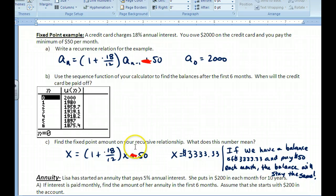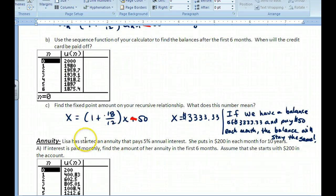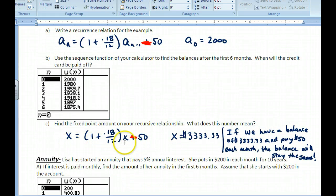At the fixed point, the now term equals the previous term, so you can call both of these X and set up this equation. When you solve this out, you get X equals $3,333.33.